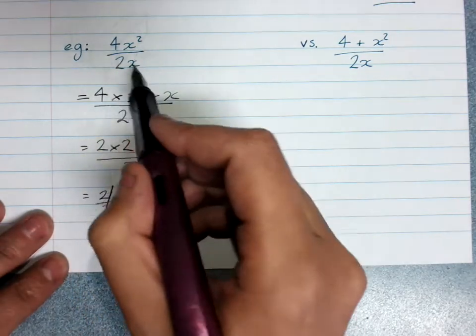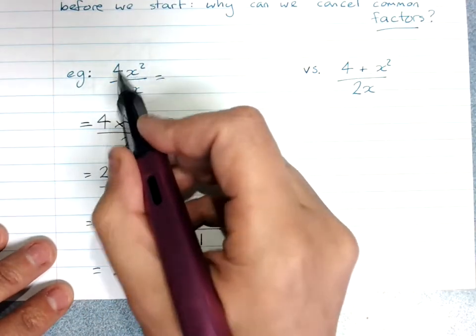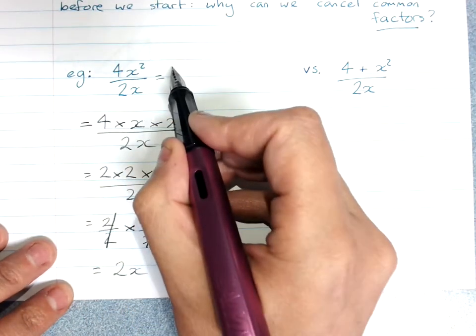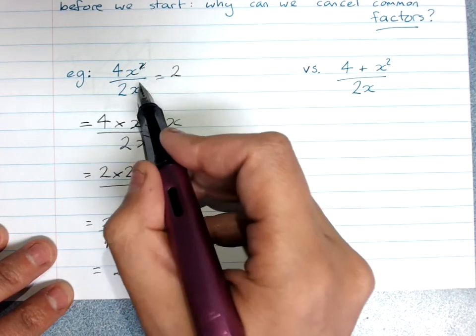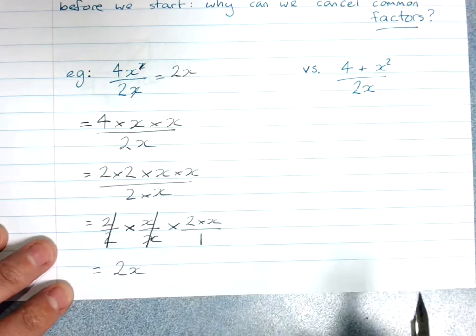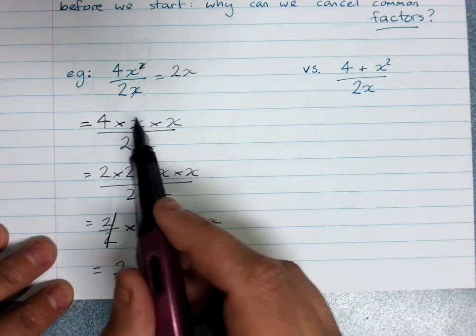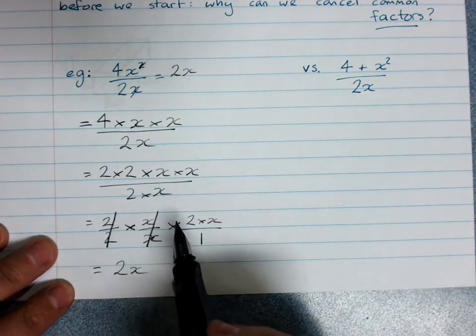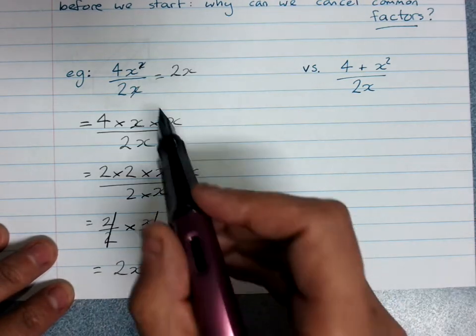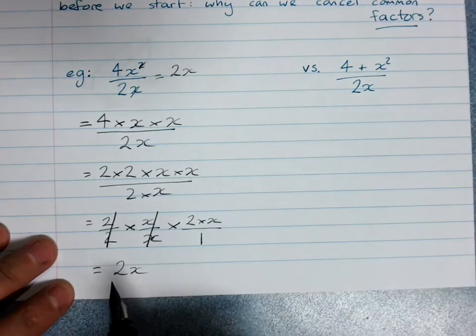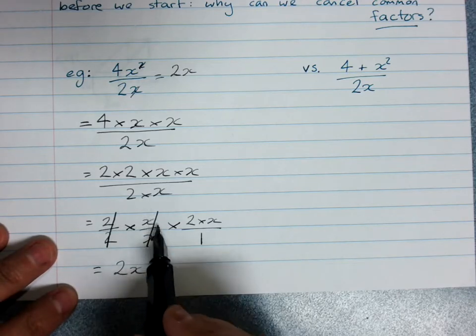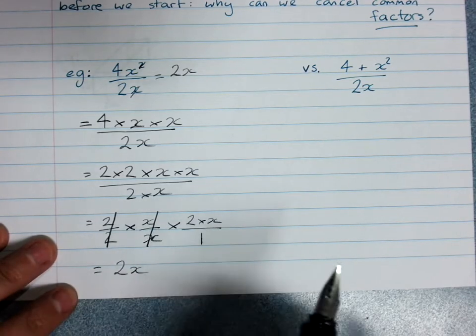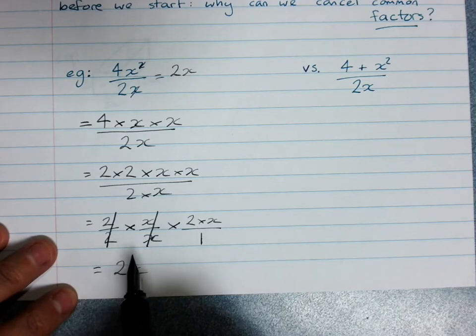And if we did this the short way, 4 divided by 2 simplified leaves me with 2 on top. x squared over x, you cancel your x's, and I've got 2x. Obviously, we don't show all this working, but that shows you how it is that we're allowed to cancel out common factors, because multiplying by 1 might as well not exist. We can get rid of that.